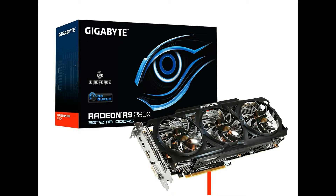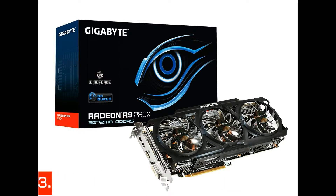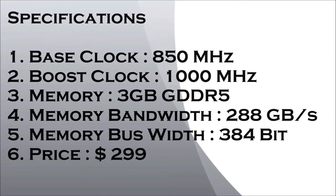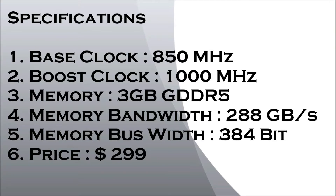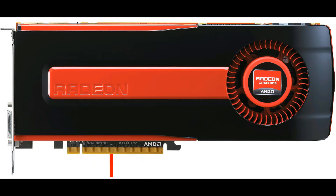Starting with number three: the AMD Radeon R9 280X. The base clock is 850 MHz, the boost clock is 1000 MHz, and the memory is 3 GB GDDR5. The memory bandwidth is 288 GB per second, the memory bus width is 384-bit, and the price is approximately $299.